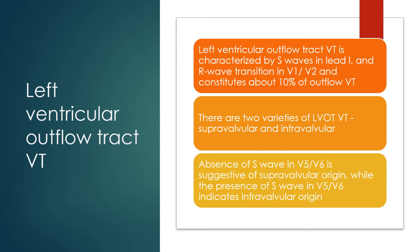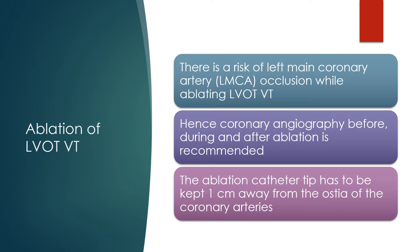Left ventricular outflow tract VT is characterized by S-waves in lead I and early R/S transition in V1-V2, and constitutes about 10% of outflow VTs. There are two varieties: supra-valvular and infra-valvular. Absence of S-wave in V5-V6 is suggestive of supra-valvular origin, while presence of S-wave in V5-V6 indicates infra-valvular origin. There is a risk of left main coronary artery occlusion while ablating LVOT VT; hence coronary angiography before, during, and after ablation is recommended. The ablation catheter tip must be kept 1 cm away from the ostia of the coronary arteries.